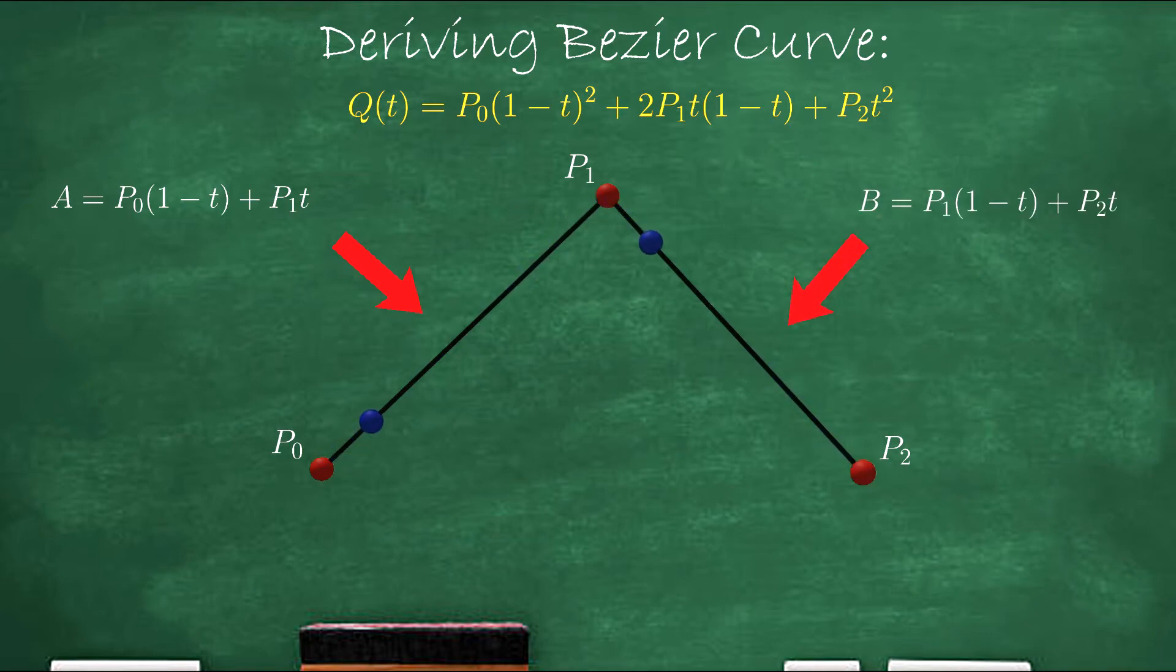Notice how interpolation A and B are themselves just points. We just use a function to describe them because they're not still. So if we treat A and B as two different points, we should be able to lerp between them as well. We'll call this third lerp Q.